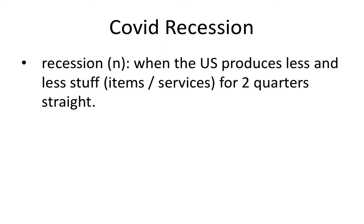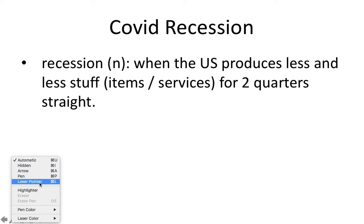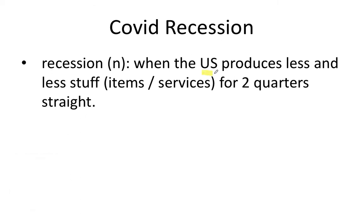So first, let's talk about the recession that happened earlier this year caused by the coronavirus. So what is a recession? A recession is basically when the U.S. produces less and less stuff for two straight quarters — so for six months. And when I say produces less stuff, we're talking about producing less items and less services.